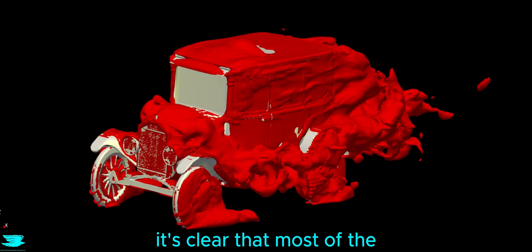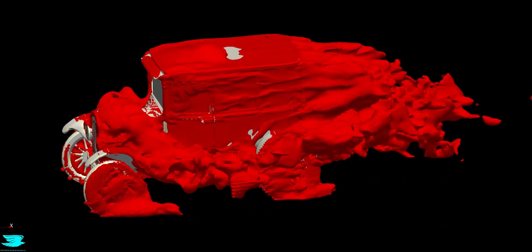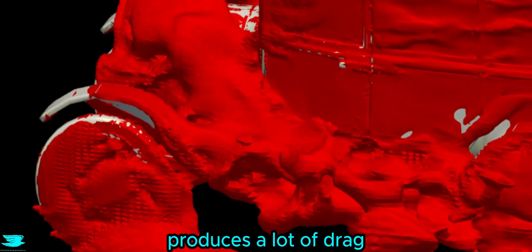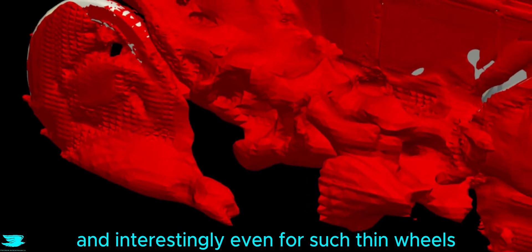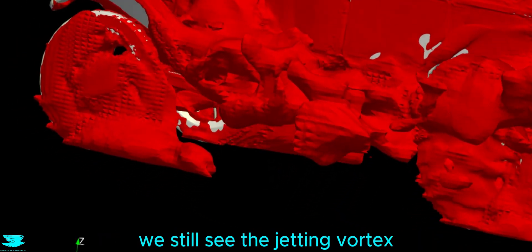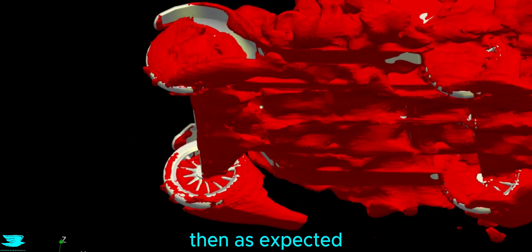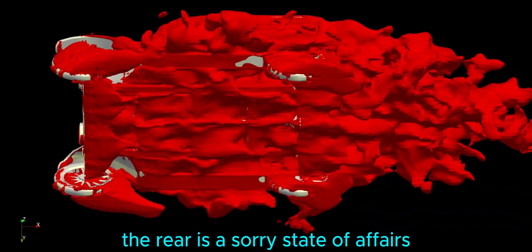This is the drag, and immediately, it's clear that most of the car is engulfed in it. The front, because it is so blunt, produces a lot of drag, so do the wheel arches. But looking closely at the front wheels, they don't produce that much drag. And interestingly, even for such thin wheels, we still see the jouncing vortex and the drag associated with it. Then as expected, the rear is a sorry state of affairs.